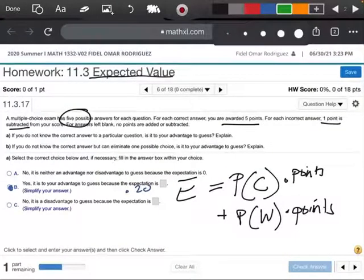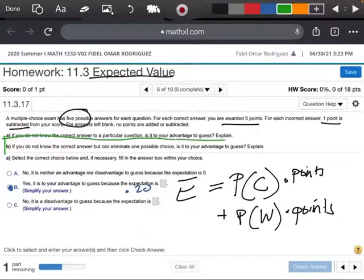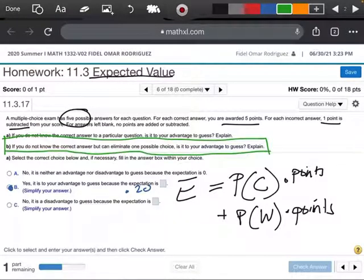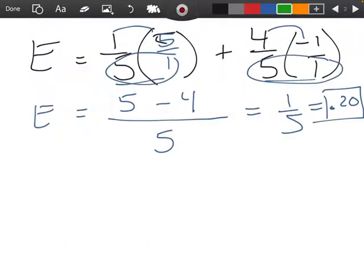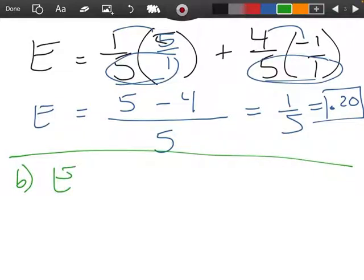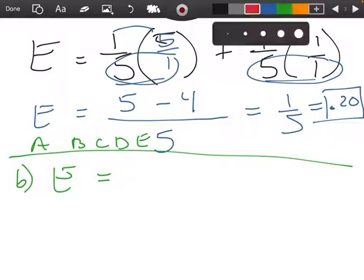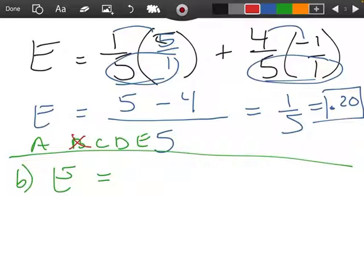And part B says, if we don't know the answer, but we know that one of the choices is not the right one, is it to our advantage to guess? Okay, so now part B, when we're going to find our expected value. Remember, we had five choices, so I'm going to kind of make it up like this. I'm going to say our choices were A, B, C, D, and E, right? And we knew that one of those choices was not the right one. So like, for instance, we knew that there was no way that was going to be the answer.